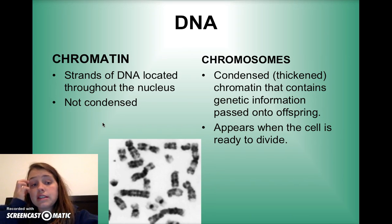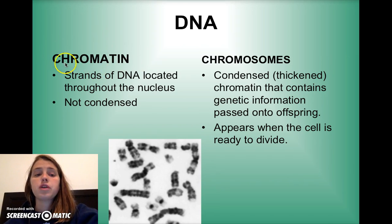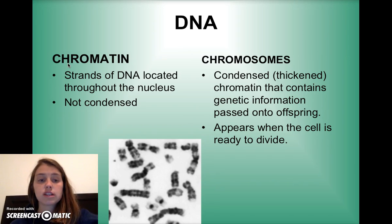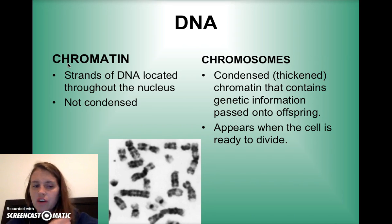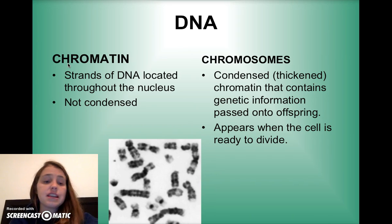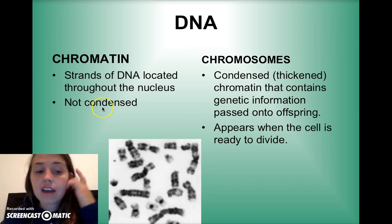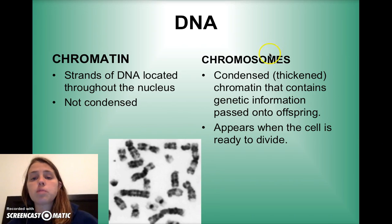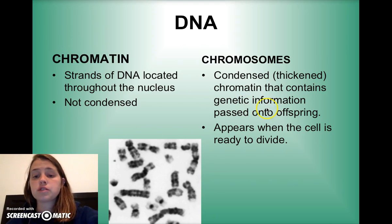DNA in your nucleus can appear in one of two forms. In the chromatin form it's not condensed — it's very thin, almost like spaghetti or hairs that you can barely see. But when you take a bunch of it and twist it together, it becomes chromosomes, or condensed chromatin. Your genes are held in chromatin and chromosomes in your cell.